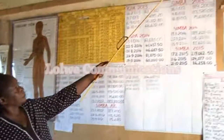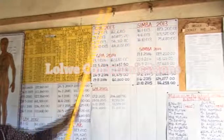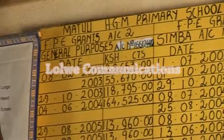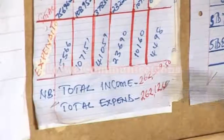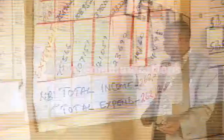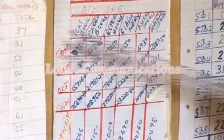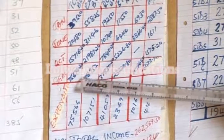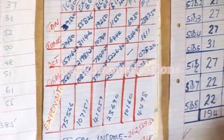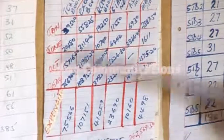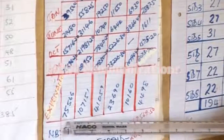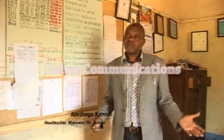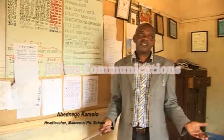Manda CBO, through the use of the CVA approach, has impressed on head teachers to display on notice boards the FPE funds received from the government and how they have been utilized, to enhance transparency. When you look at 2015, the total funds received that year were 75,666.20 shillings, and the expenditure for the year was 75,516 shillings. If you want to run the school well without stress, be transparent — to the teachers, to the pupils, to the parents, to anybody who comes to that school.